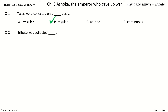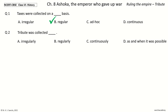Question two: tribute was collected blank. The options are irregularly, regularly, continuously, or as and when it was possible. Your time to choose. The answer is as and when it was possible. So tribute was collected as and when it was possible.